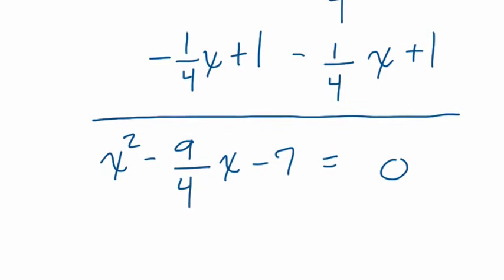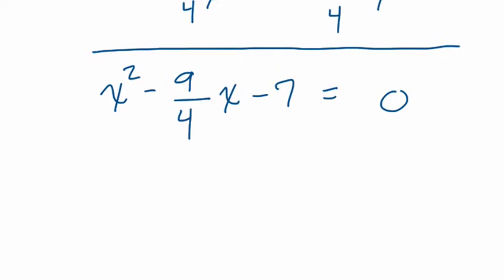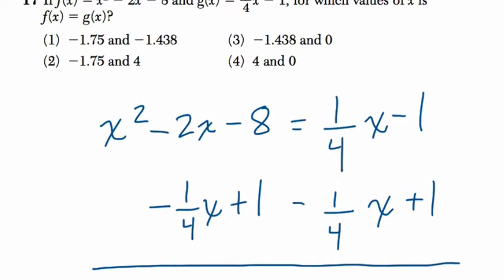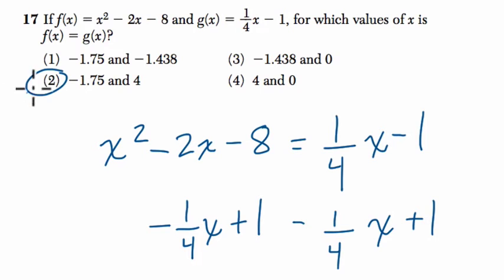Now we've got to find the x values that work right here. For me, I don't really want to factor this because it's a little bit difficult. This is a multiple choice problem, so you can plug in answers to see which x values would give you 0. If you went through it, you would find choice 2.